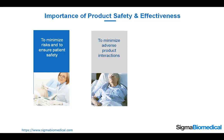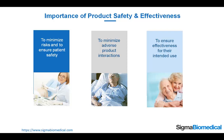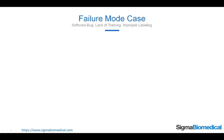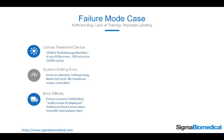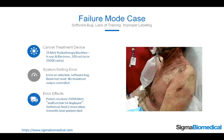The importance of product safety and effectiveness: to minimize risks and to ensure patient safety, to minimize adverse product interactions, and to ensure effectiveness for their intended use. Here's a failure mode case involving a software bug, lack of training, and improper labeling. The product was a cancer treatment device — a 25 mega electron volt radiotherapy machine capable of delivering both x-rays and electrons: 200 rads of electrons or 25,000 rads of x-rays. A system setting error, coupled with a software bug, caused the beam to not reset and not control the maximum output. The patient received 25,000 mega electron volts directly. The product displayed an error message of 'malfunction 54,' but the technician fired the device two more times anyway, and four months later, the patient died.